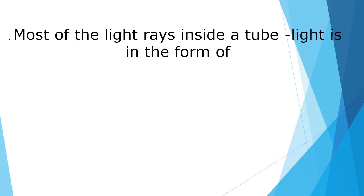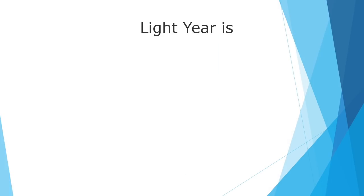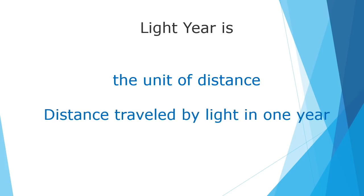Most of the light rays inside a tube light are in the form of ultraviolet (UV) light. A light year is the unit of distance — specifically, the distance traveled by light in one year.